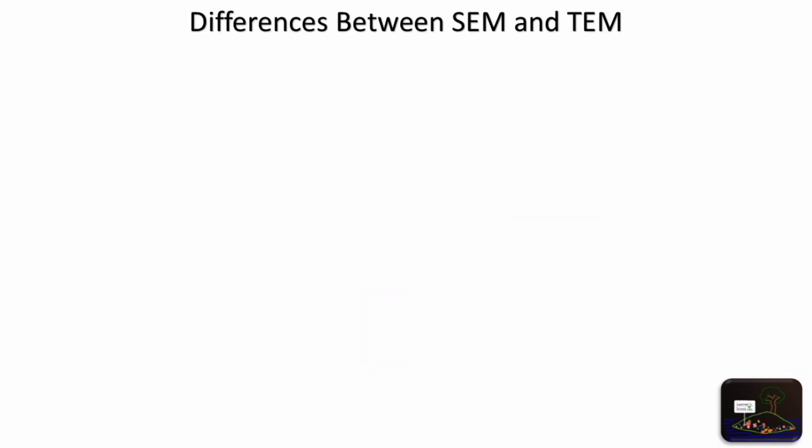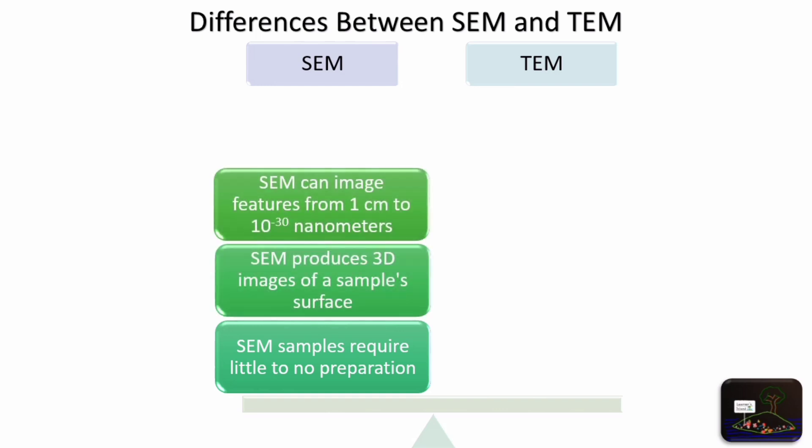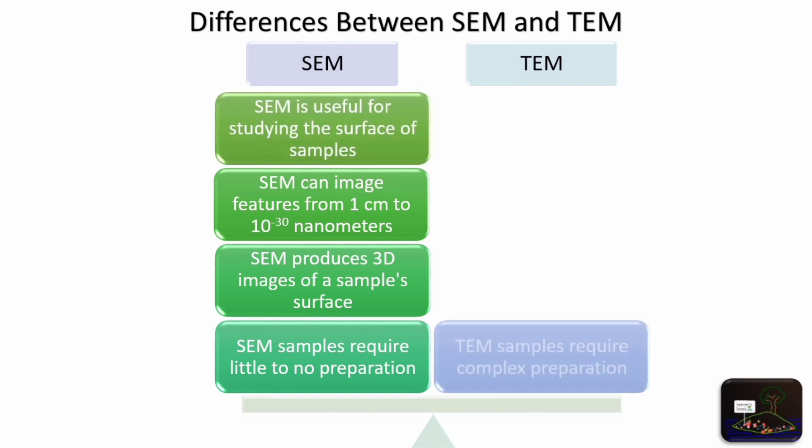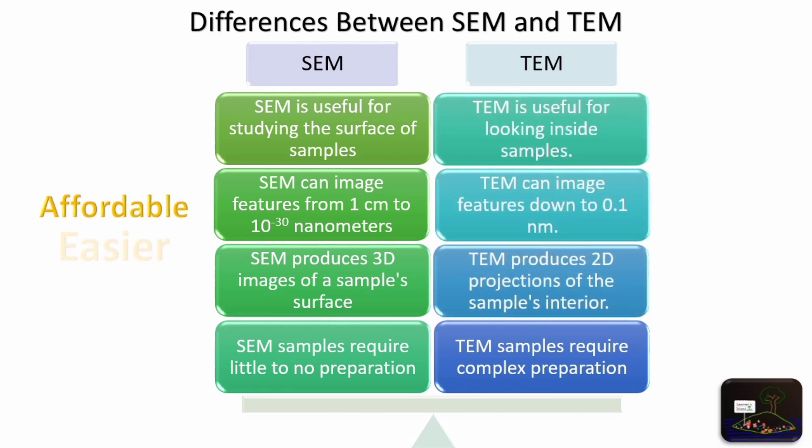So which one is better? SEM or TEM? Let's see the difference between SEM and TEM. SEM samples are easily produced. SEM gives 3D image. SEM sample ranges from 1 centimeter to 10 to the power minus 30 nanometers. SEM is used to study surface morphology. While TEM sample requires complex preparations, TEM produces 2D images, with range down to 0.1 nanometers. TEM is used to study the insights of the sample.